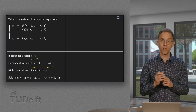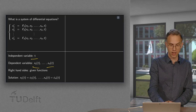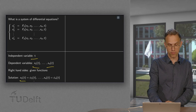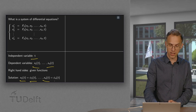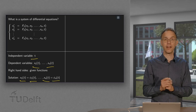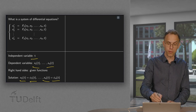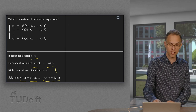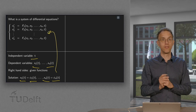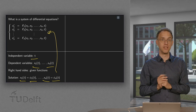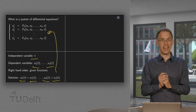Those right-hand sides are given. So what we are looking for are functions: x1(t) equals some function φ1(t), up to xn(t) equals φn(t). Once we have those functions, when we plug everything into those equations, all of them should be satisfied. So that is the game.